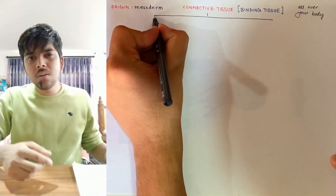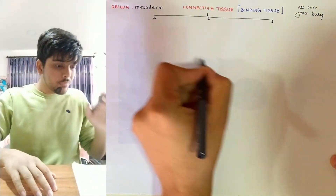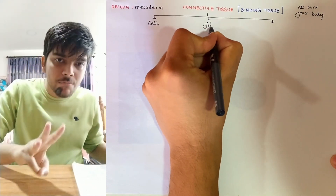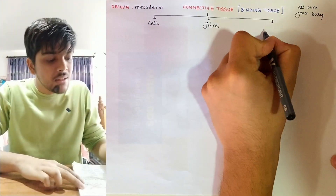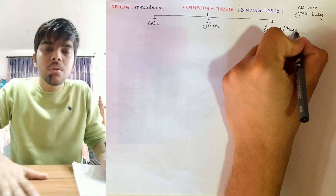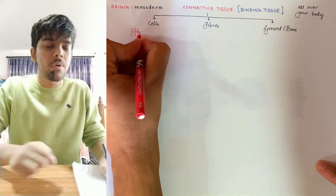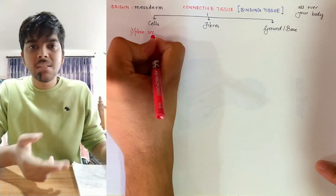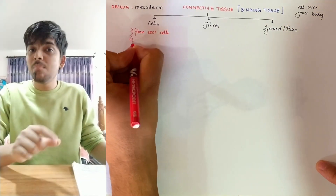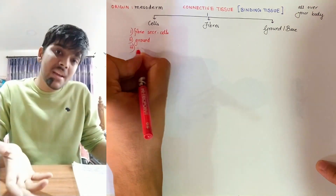Connective tissue contains three major components: the cells of the connective tissue, the fibers of connective tissue, and the ground or base on which these cells and fibers lie. Cells are of various types — cells that make fibers, cells that make the base of the connective tissue, and cells that are there for protection.